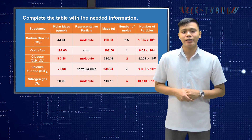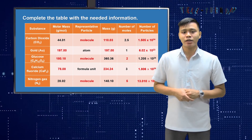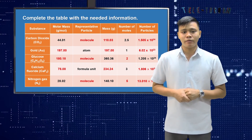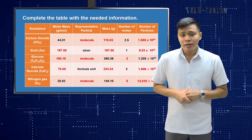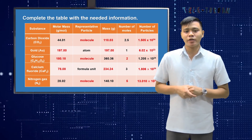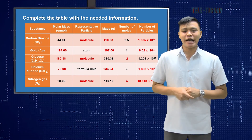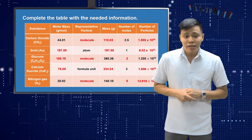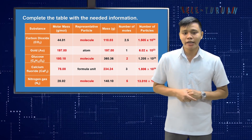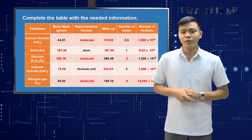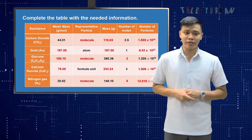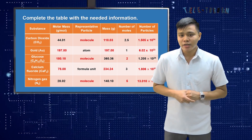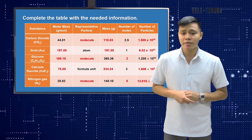For carbon dioxide, the representative particle is molecule, mass is 110.03, and number of particles is 1.505 × 10²⁴. For gold, the molar mass is 197, mass is also 197, and number of particles is 6.02 × 10²³. For glucose, the molar mass is 180.18, the representative particle is molecule, and number of molecules is 2. For calcium fluoride, the molar mass is 78.08, mass is 234.24, and number of particles is 1.806 × 10²⁴. For nitrogen gas, the representative particle is molecule, number of moles is 5, and number of particles is 3.01 × 10²⁴.